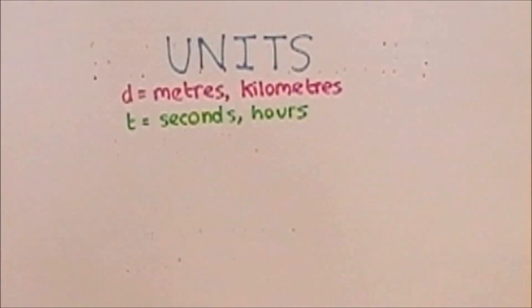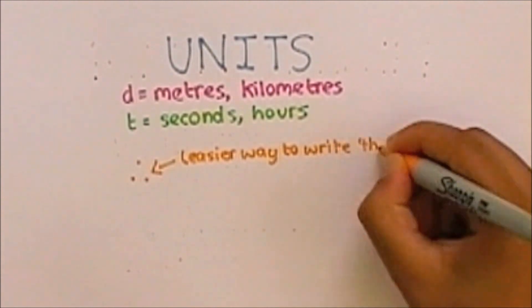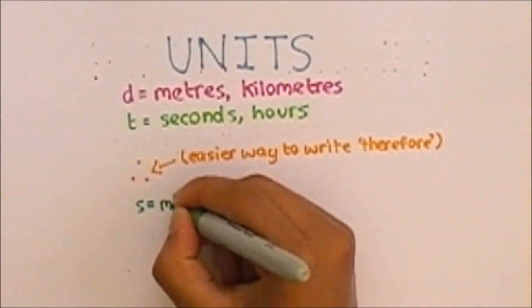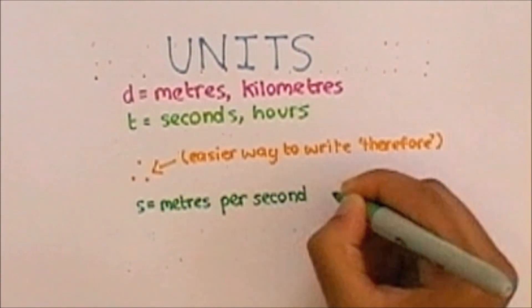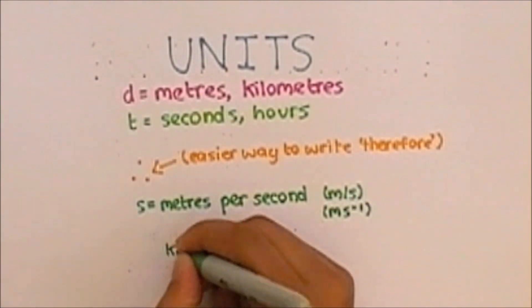Therefore, the unit for speed is metres per second or kilometres per hour. Both of these units can be written in two ways that mean the same thing as shown.